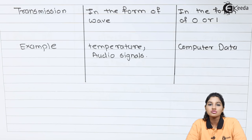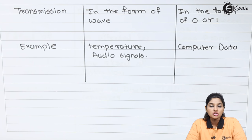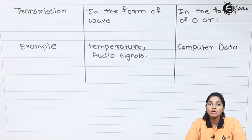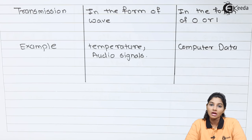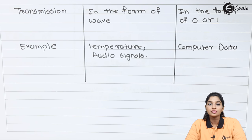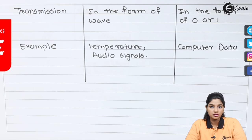Moving towards the applications of digital signals — digital signals have many applications in the area of communication and in industrial areas. They can be used to carry information over longer distances, and nowadays it is very easy to recover information if it is stored in digital form rather than in analog form.